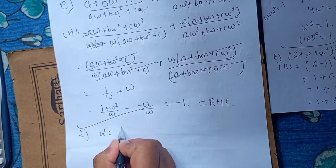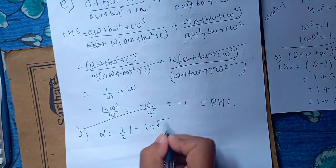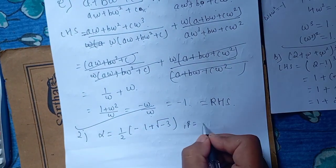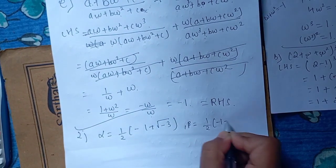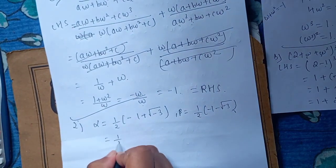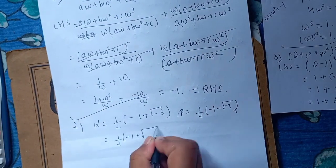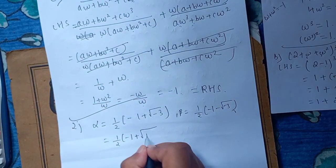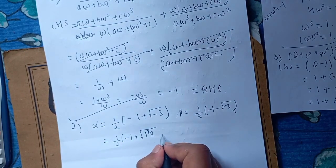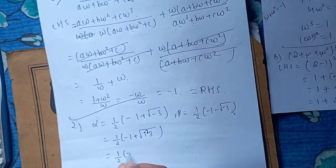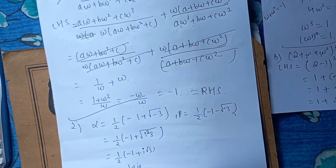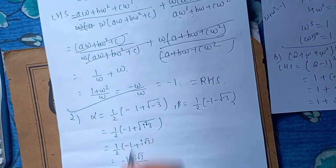Alpha is equal to 1 by 2 minus 1 plus root minus 3, and beta is equal to 1 by 2 minus 1 minus root minus 3. This is equal to i square. It is equal to 1 by 2 minus 1 plus i root 3 by 2. This is equal to omega.